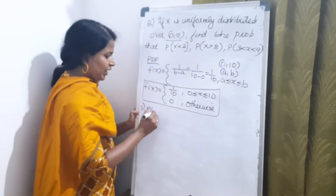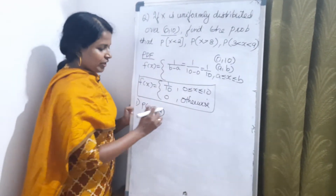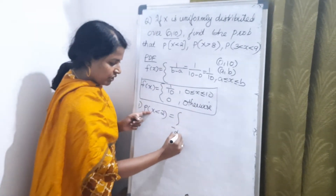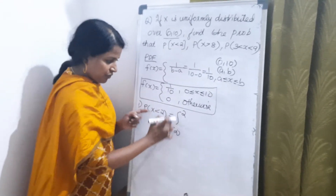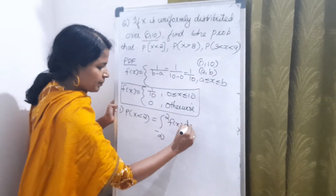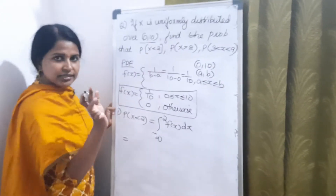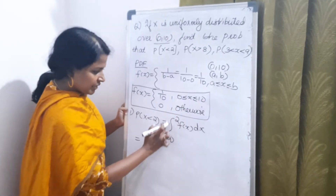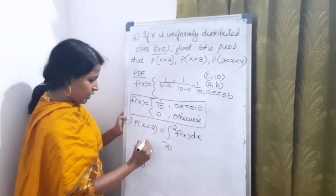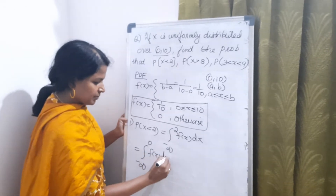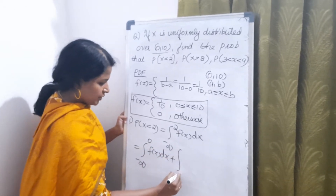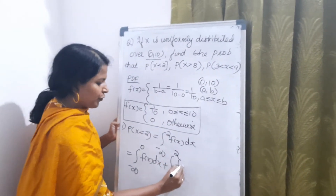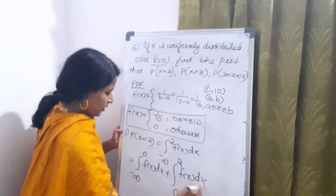First question: P(X < 2). P(X < 2) means the integral from −∞ to 2 of f(x) dx. We split this into the integral from −∞ to 0 of f(x) dx plus the integral from 0 to 2 of (1/10) dx.